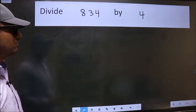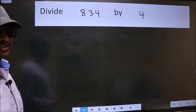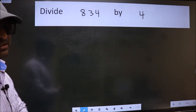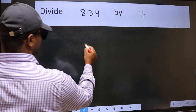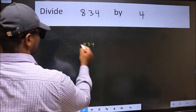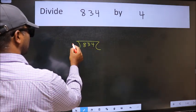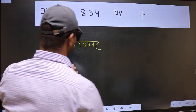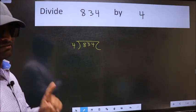Divide 834 by 4. To do this division, we should frame it in this way: 834 here and 4 here. This is your step 1.